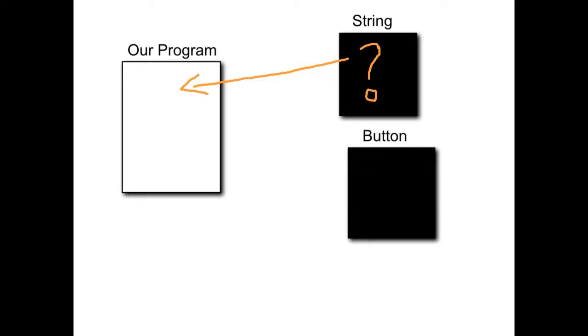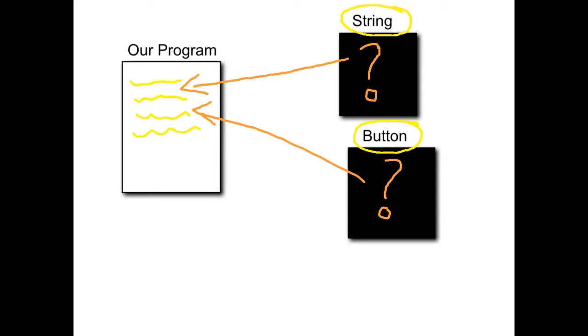Someone also created the blueprint for a button, and again we don't know the details of that, but we can quite happily use it. So the string and the button are both objects. They were created by someone who decided what attributes and behaviors were associated with those objects, and they wrote a piece of code that outlined the blueprint for those objects. But what we're going to look at now is how to create our own objects that are then reusable for our own pieces of code.